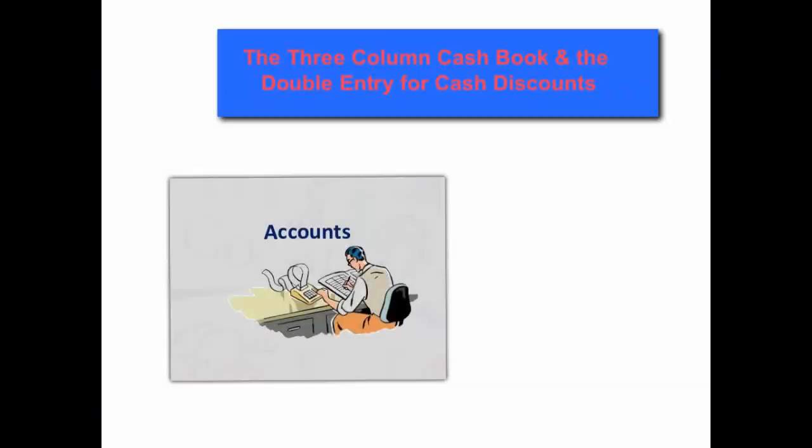Hello, my name is Dean L. Hoss and today I'm going to run through with you the double entry for cash discounts allowed and received, which are entered into the three column cash book.